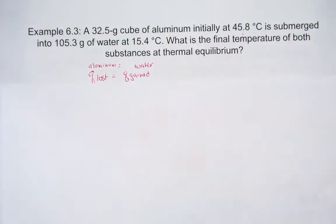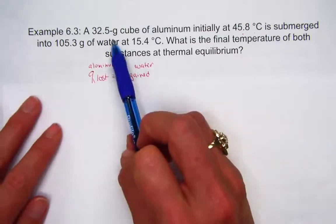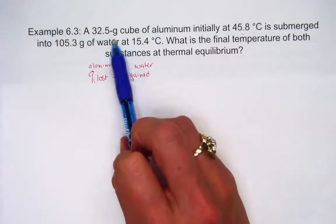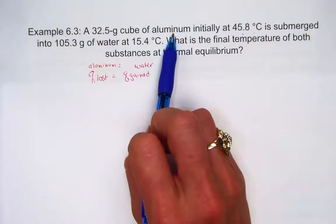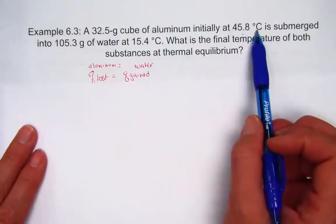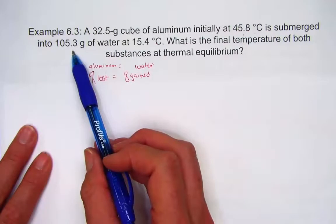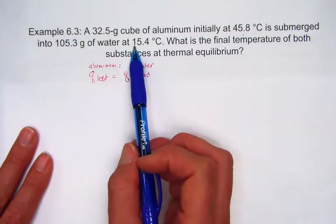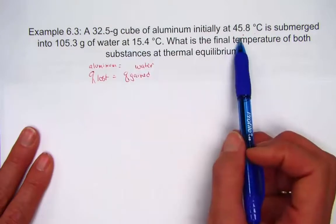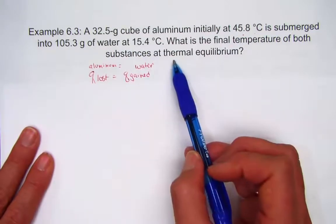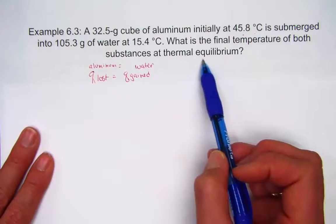Let's take a look at an example problem where we're given a 32.5 gram cube of aluminum, initially at a temperature of 45.8 degrees Celsius, and I'm placing that into 105.3 grams of water at 15.4 degrees Celsius. What would the final temperature of both substances at thermal equilibrium become?